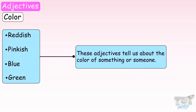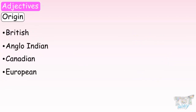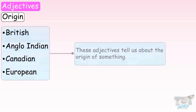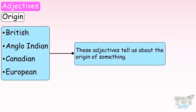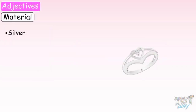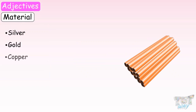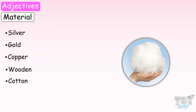Origin adjectives include: British, Anglo-Indian, Canadian, European. These adjectives tell us about the origin of something. Material adjectives include: silver, gold, copper, wooden, cotton. These adjectives tell us about the material something is made up of.